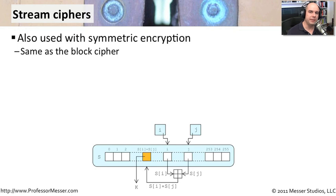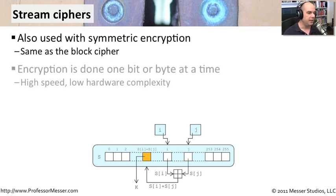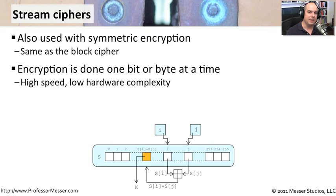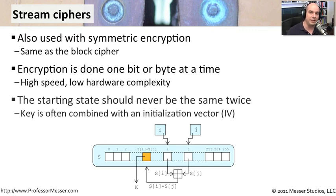Another type of cipher is called a stream cipher. Just as block ciphers are only used with symmetric encryption, stream ciphers are also only used with symmetric encryption. Instead of encrypting entire blocks at a time, a stream cipher encrypts one bit or one byte at a time as the data is streaming by. This can run very quickly and usually uses very low hardware complexity — you don't need a lot of fancy chipsets or calculations. So it can be done very quickly, which makes sense if data is streaming by fast and you need a method that can keep up.